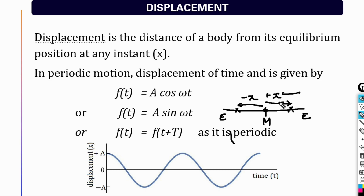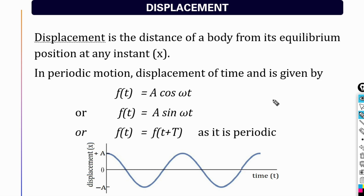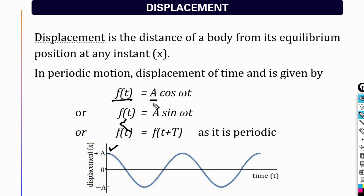Usually the particle is performing a periodic function, therefore the displacement is a function of time. The maximum displacement from the equilibrium position is represented as A, which is known as amplitude.